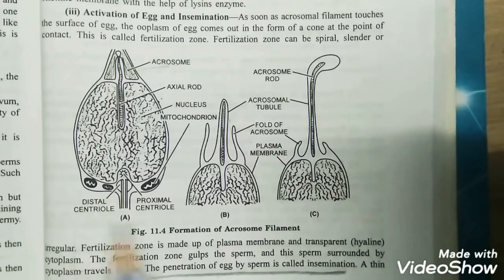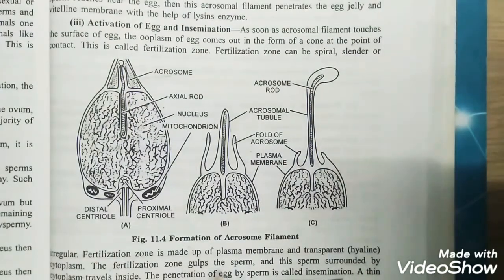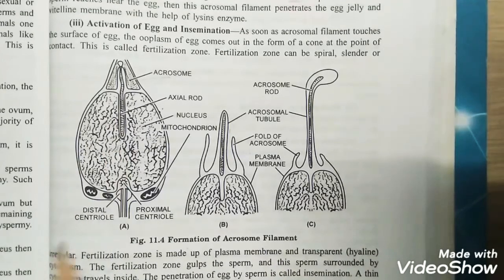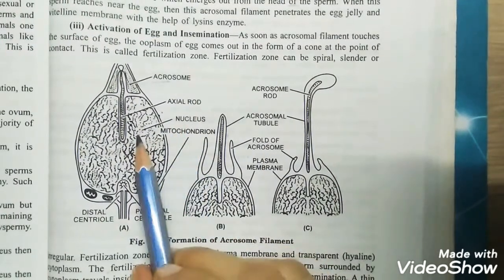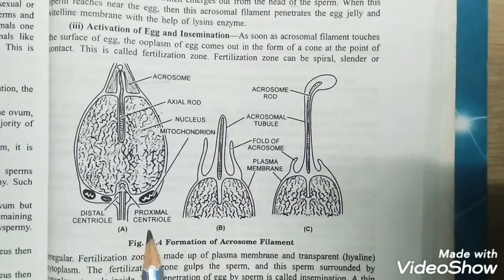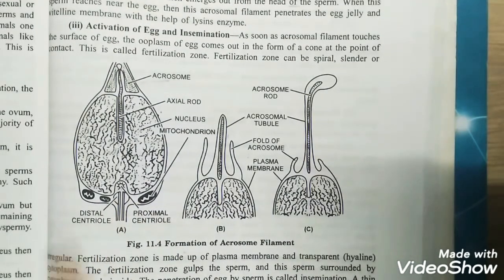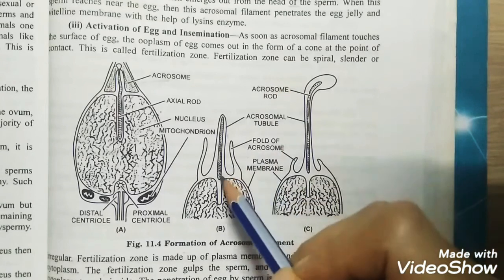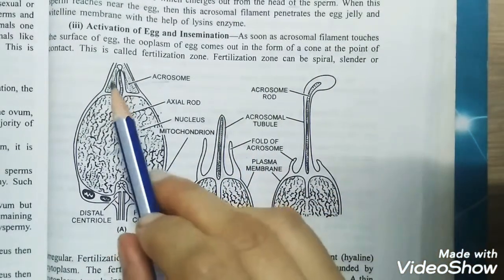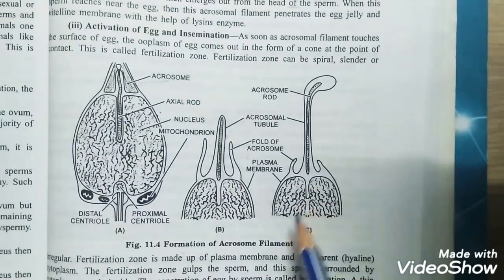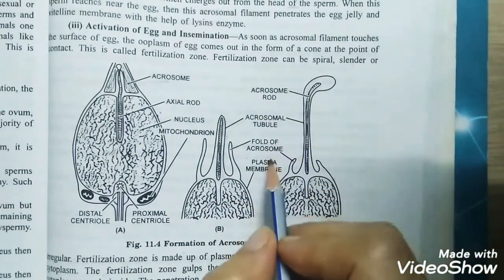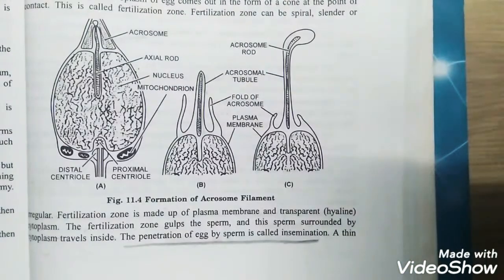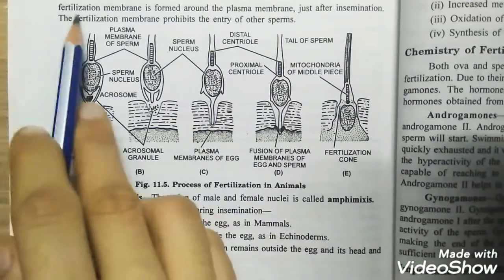Now let's look at the diagram showing the formation of the acrosomal filament. This basic diagram of a sperm shows the acrosome, axial rod, and nucleus — this is the head of the sperm. There is also a nucleus, a mitochondrion part, and the proximal and distal centrioles. Next we can see the acrosomal tubule formation, where the acrosomal tubules slowly develop from the breaking of the acrosomal membrane and form a rod-like structure known as the acrosomal rod or acrosomal tubule.